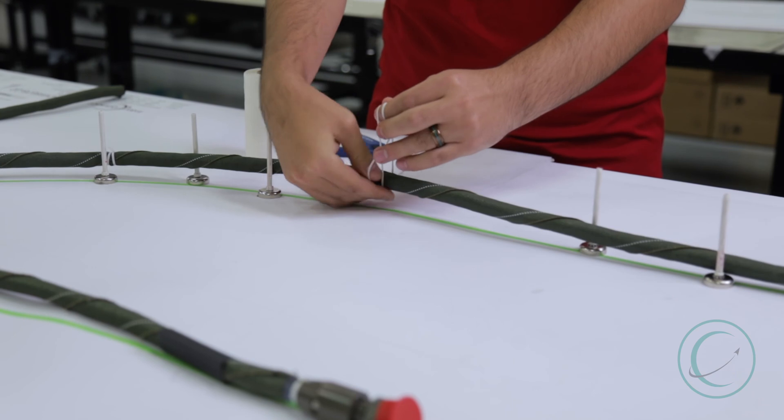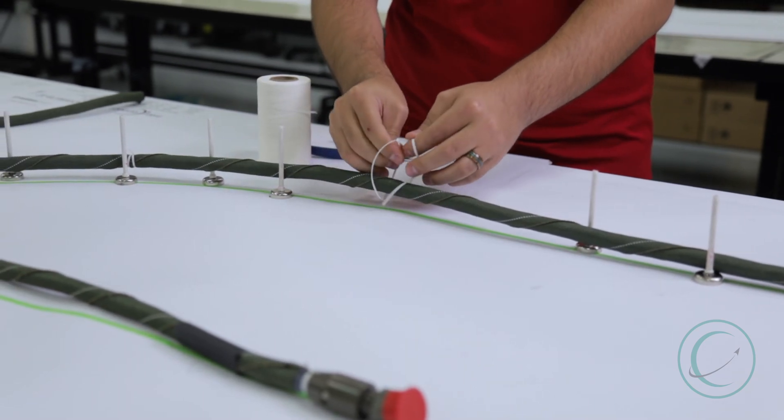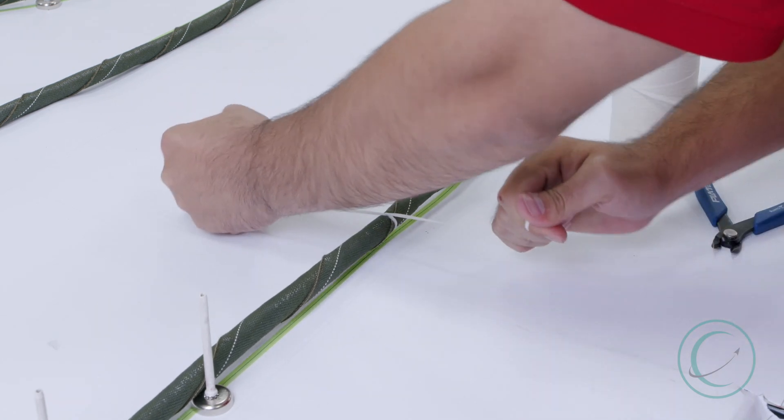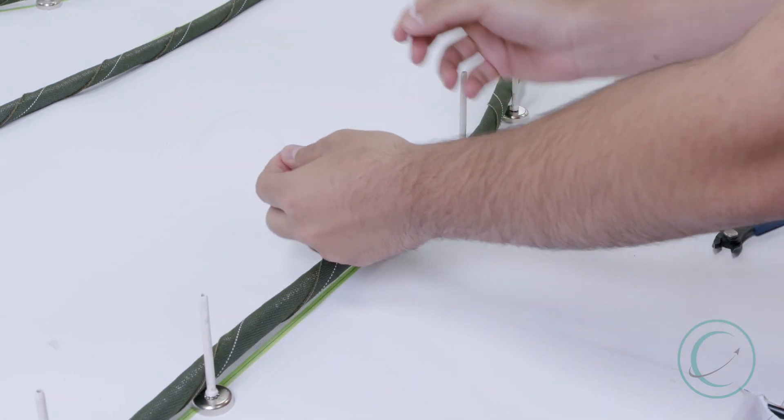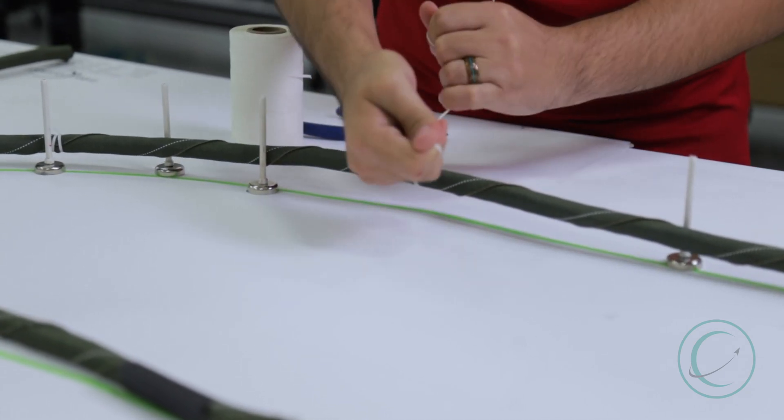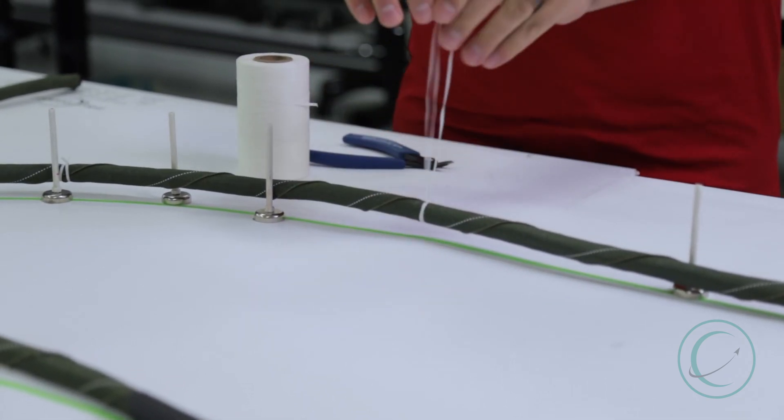You want to make sure you read the customer specification and what they call out, because there's a certain length needed for each one. So we're going to cinch this knot. You don't want it too tight either. It can damage the wire if you're too strong. So double loop it and pull. You should hear that sound if you're tightening it correctly.